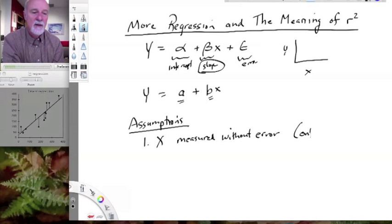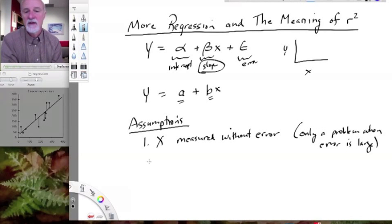However, this is only a problem when the error is large. So people have investigated this, and it only causes a problem with fitting a line to the data if the error is large. So something to think about when you're doing regression is that your x variable, you want to measure it as carefully as you possibly can to reduce the error in that measurement.